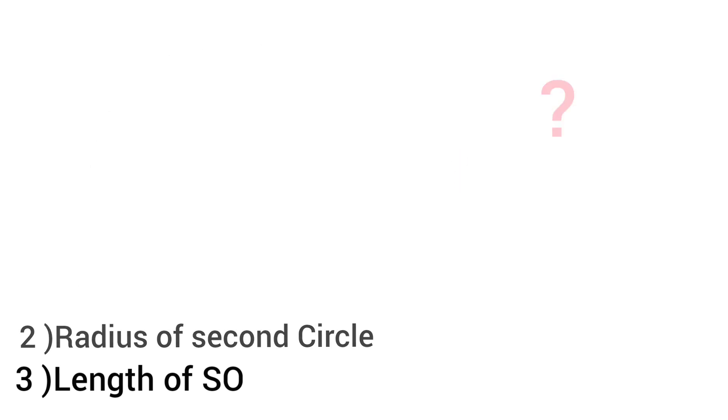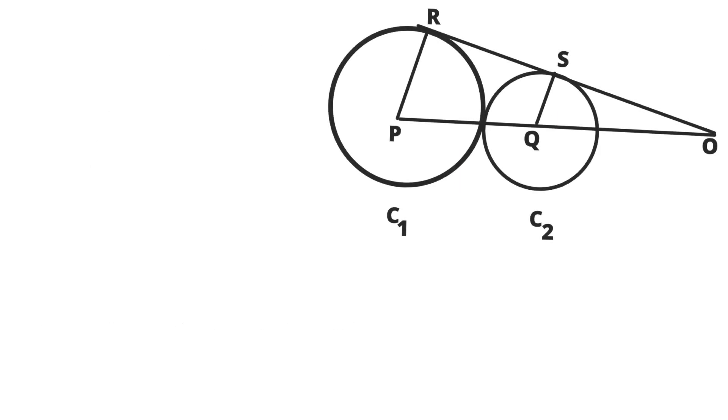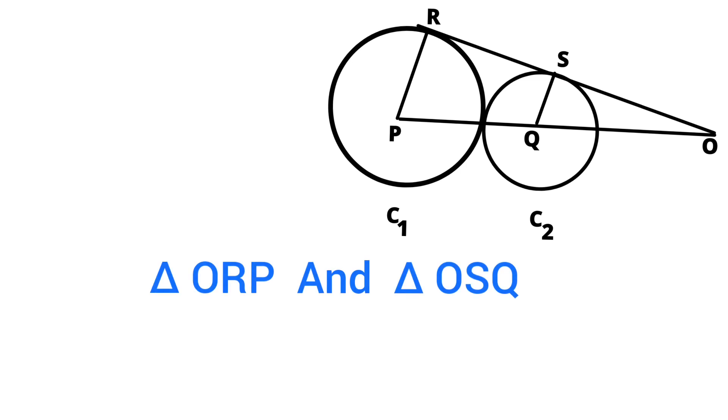To find out, let's draw radius of both the circles. That is, let's join PR and QS. Now, here we have two triangles. That is, triangle ORP and triangle OSQ.